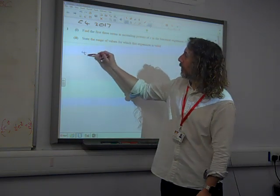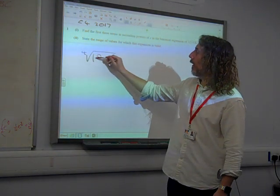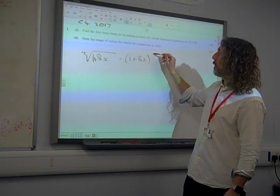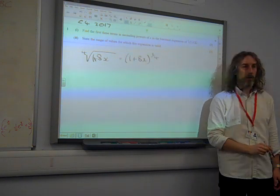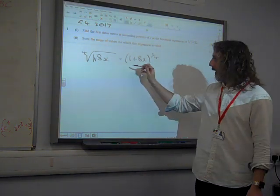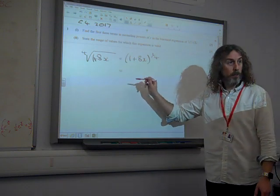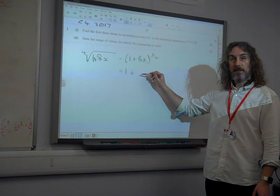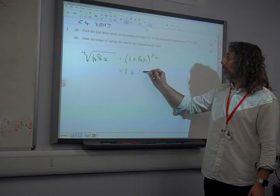We need to write the fourth root of 1 plus 8x as being 1 plus 8x to the power of a quarter, because that's what the fourth root means. Then we can do our binomial-y stuff with that. So, remember that the formula in your formula book said it's 1 plus n times x, so that is a quarter times 8x,